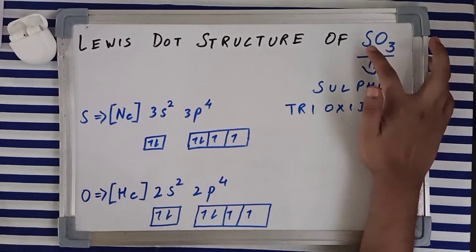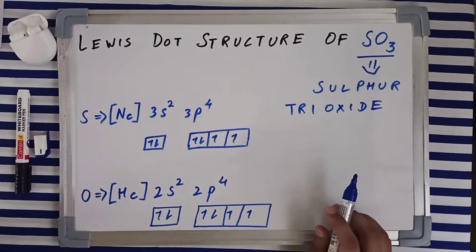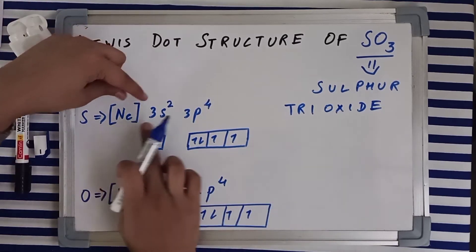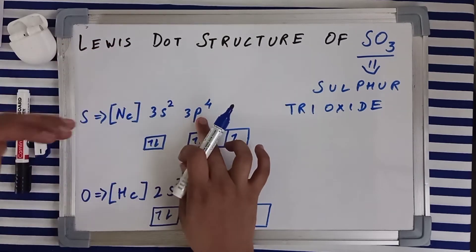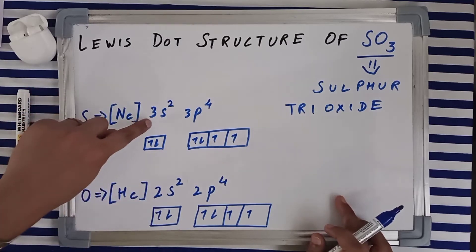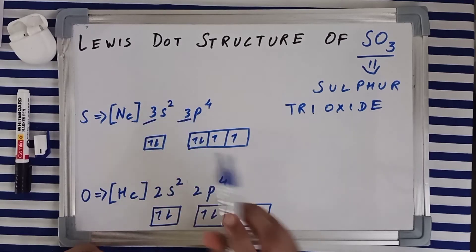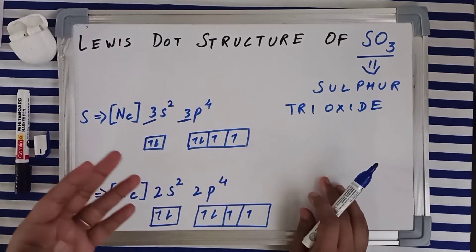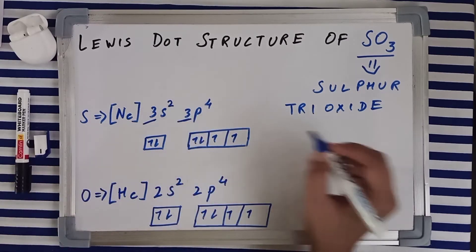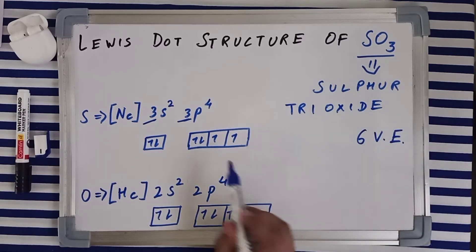It is sulfur and oxygen respectively. Talking about the electronic configuration of sulfur first, its electronic configuration is the inert configuration of neon and then 3s² and then 3p⁴. It is a third period element, which is why the last electron is entering in the third shell. So its valence shell is the third shell, and valence electrons are those electrons which are present in the valence shell. So 2 plus 4, you've got 6 valence electrons.